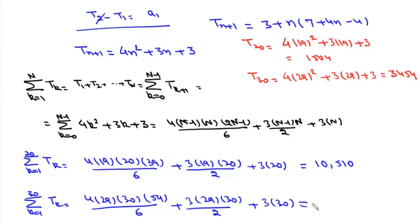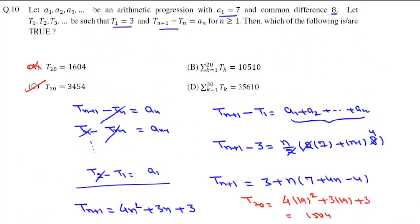And this value is 35610. So it is 10510, this is correct, and 35610. That means option D is incorrect, so the correct options are B and C.